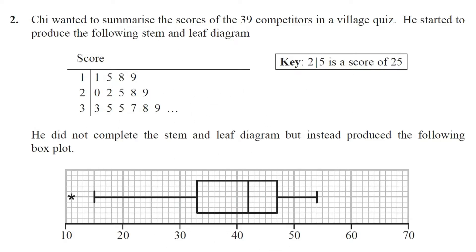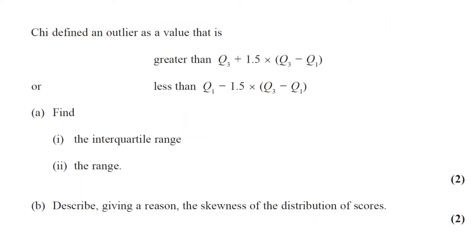Question number two. Chi wanted to summarize the scores of 39 competitors in a village quiz. He started to produce a stem and leaf diagram, then produced a box and whisker plot instead. Chi defines an outlier as a value greater than Q3 plus 1.5 times IQR, or less than Q1 minus 1.5 times IQR. Part A: find the interquartile range and the range. This question carries two marks.